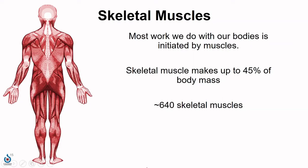Skeletal muscles alone can make up to 45% of our body mass, and the average is more about 20%, but this is a lot. In total, there are over 600 skeletal muscles. We'll talk about quite a few specific muscles, but we'll only scratch the surface on all of the ones in the body.